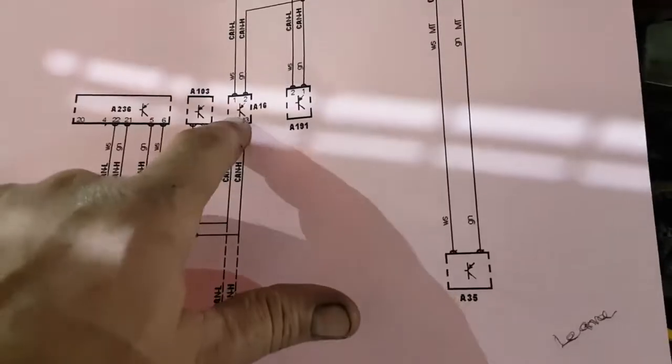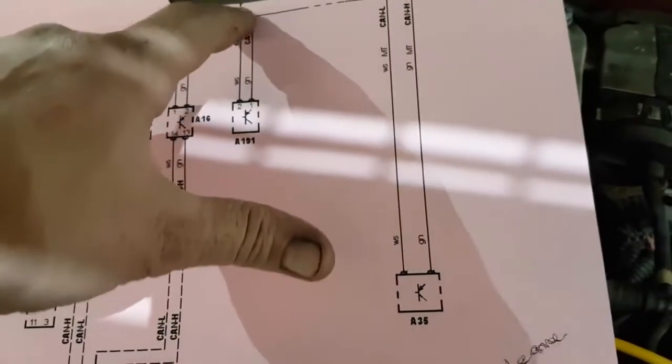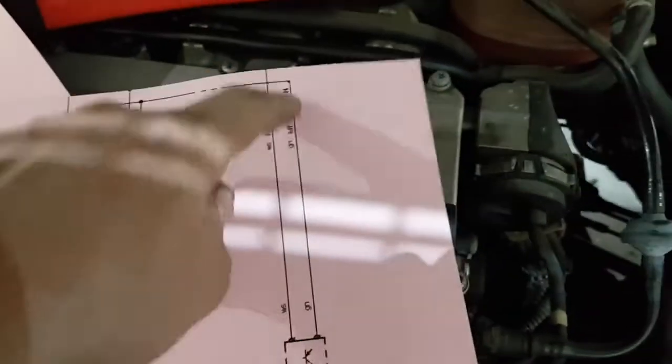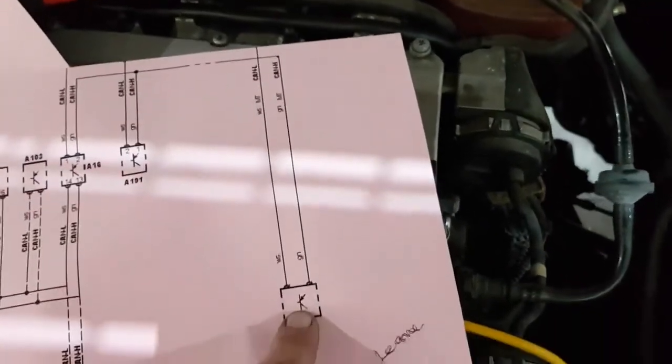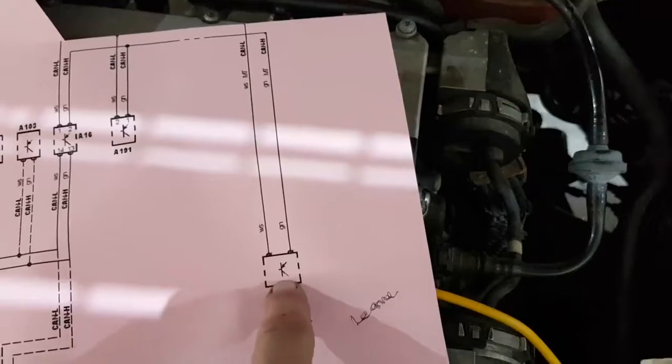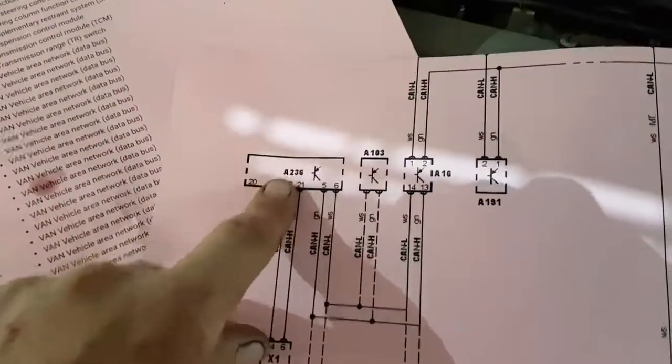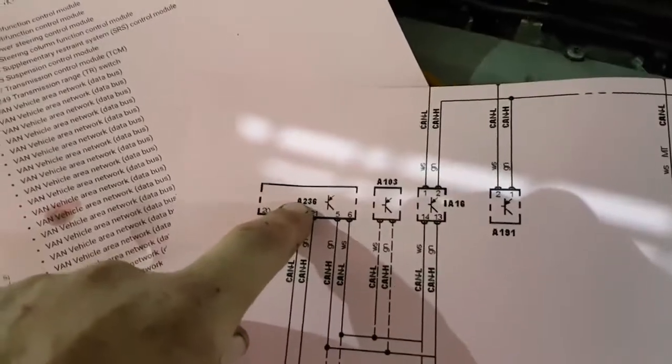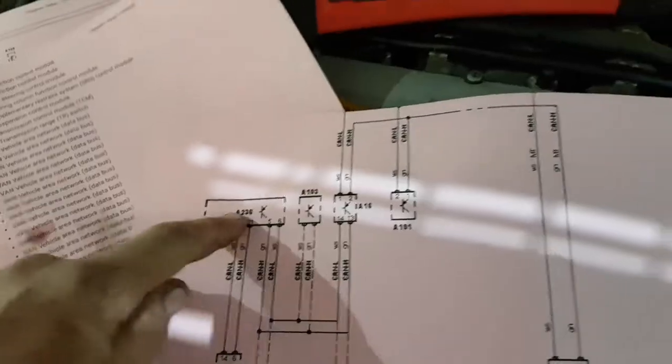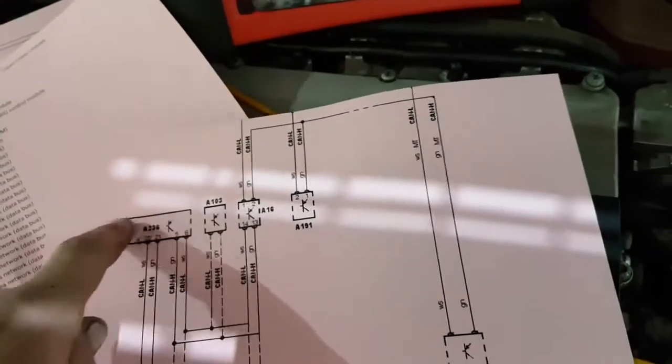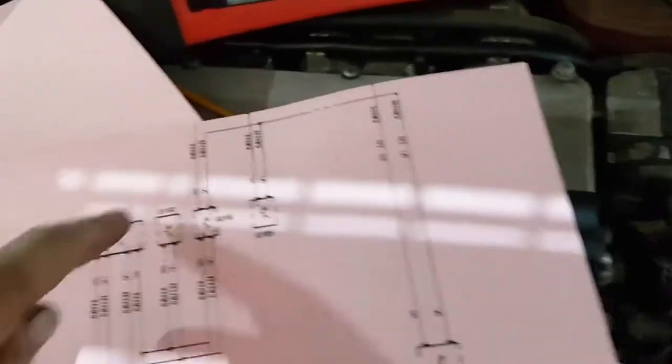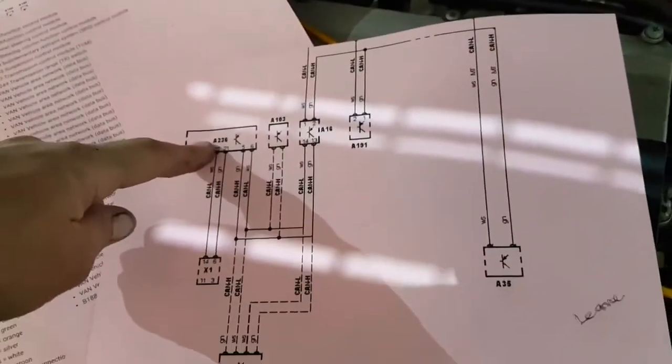And we go through another module. And we've got another one coming off it. And then we finally go down to the ECM. So we know we've got a terminating resistor in here. And after the DLC, this is our steering wheel control module. So that's most likely being the other end of the bus. We'll probably have the termination resistor in that one as well.